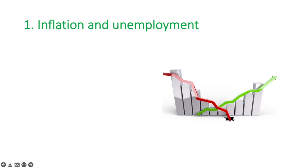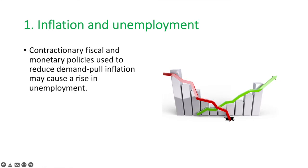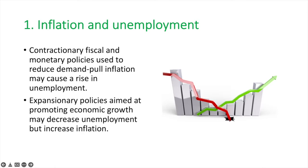First up is the conflict between inflation and unemployment. Contractionary fiscal and monetary policies used to reduce demand-pull inflation may cause a rise in unemployment. The fall in aggregate demand will reduce output and employment and potentially inflation. Expansionary policies aimed at promoting economic growth may decrease unemployment by boosting output and real GDP, but then increase inflation.